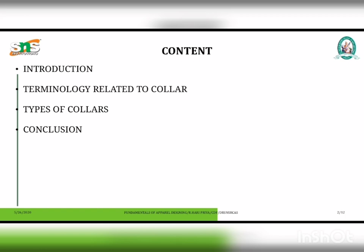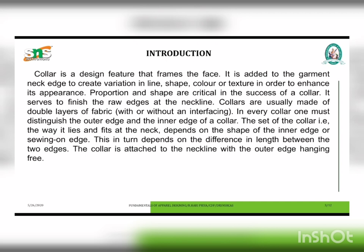Introduction: A collar is a design feature that frames the face. It is added to the garment neck edge to create variations in line, shape, color, or texture in order to enhance its appearance. Proportions and shapes are critical to the success of a collar. It serves to finish the raw edges at the neckline. Collars are usually made of double layers of fabric, with or without interfacing. In every collar, one must distinguish the outer edge and the inner edge. The set of the collar — the way it lies and fits at the neck — depends on the shape of the inner edge or sewing-on edge.